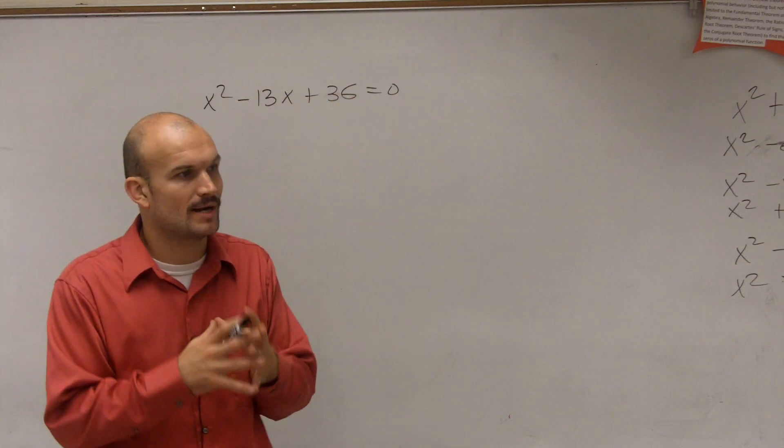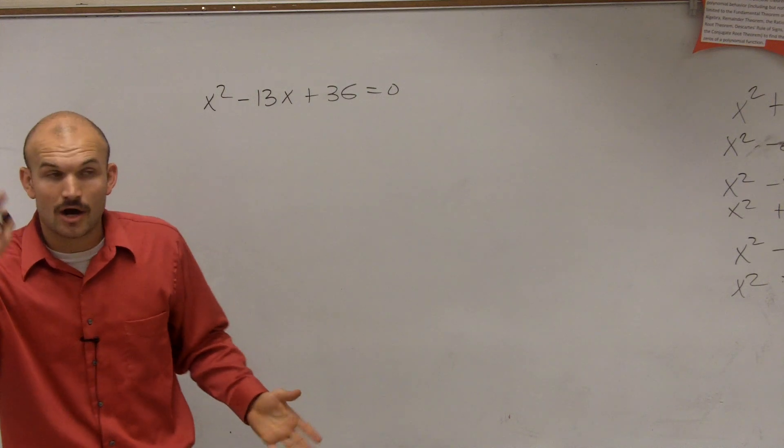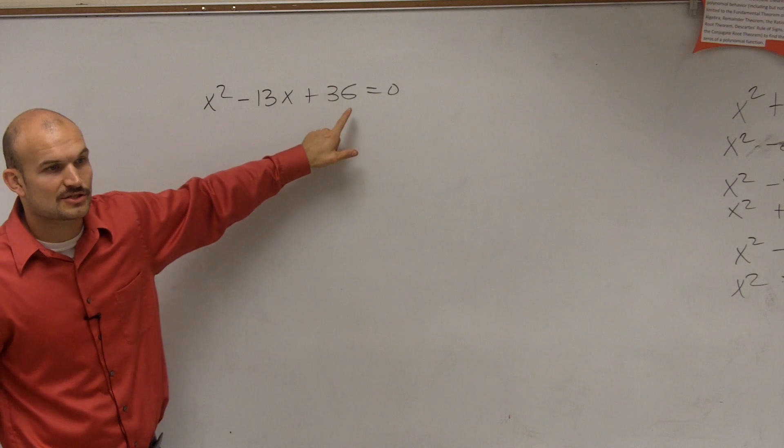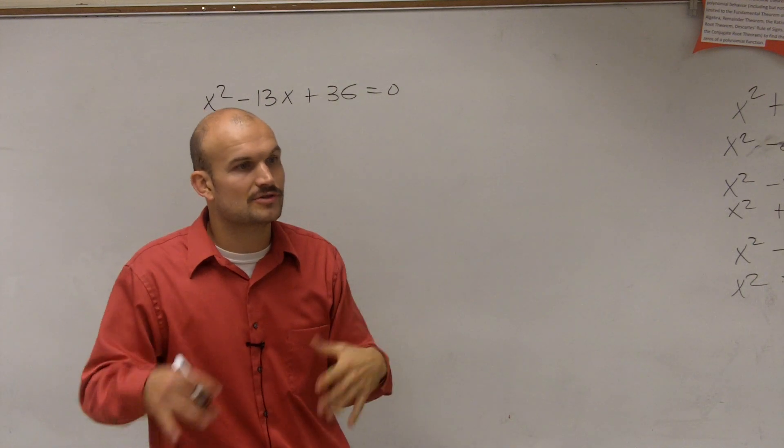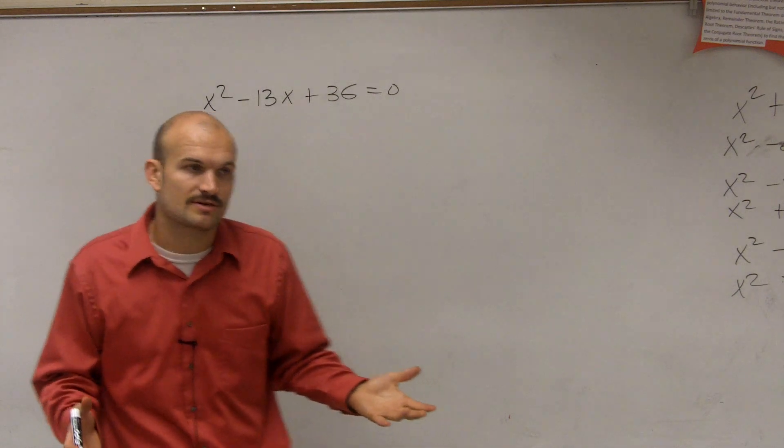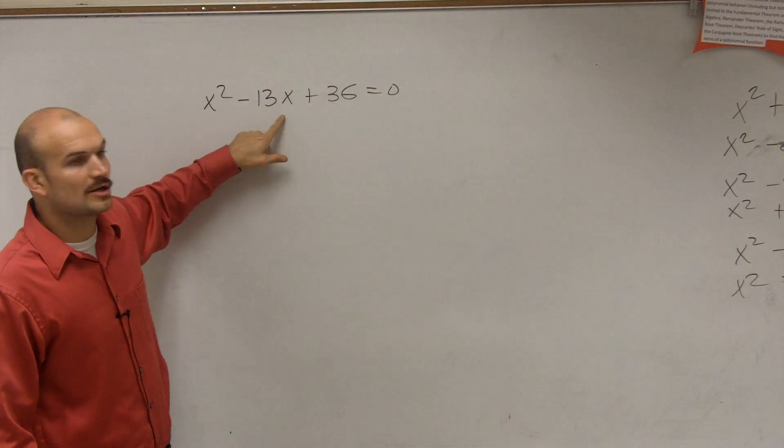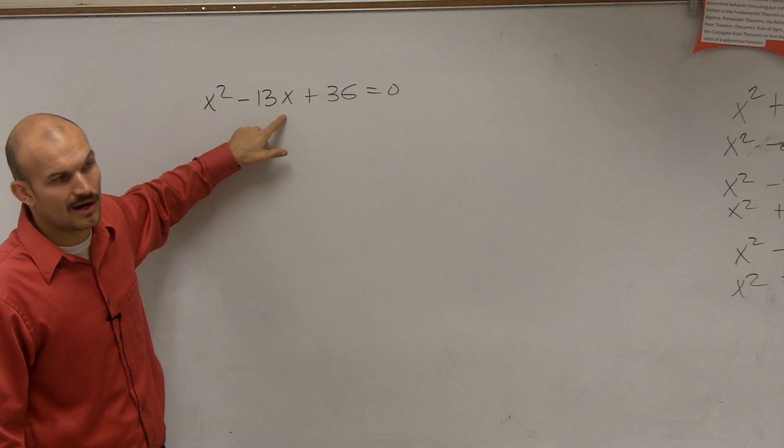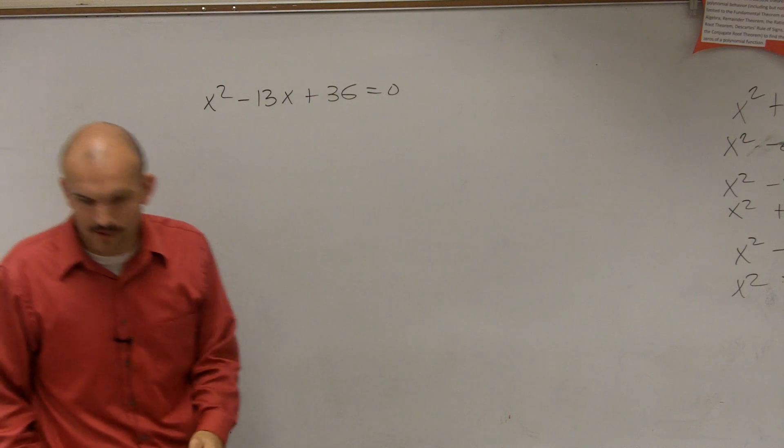When we have more than one x term, we can't use our inverse operations. We have to look into factoring. Now automatically, I see that 36 is a square number. So like we've learned before, I would want to go and see, can I use a perfect square trinomial to factor this? So I go 6 squared, good. But is my middle term twice 6? No, it's close, but it's not 12.